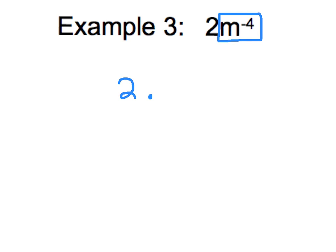Example 3 — please write this one down. I'm going to point out something here. I do have a negative exponent. My problem is 2m to the negative 4, and there's no parenthesis. That means the negative 4 exponent is only attached to the term it immediately follows, so m is the only thing that has a negative 4 attached to it. That means I'm going to have 2 times 1 over m to the 4th. Since 2 can be written as 2 over 1, multiplying numerator times numerator and denominator times denominator gives me 2 over m to the 4th.